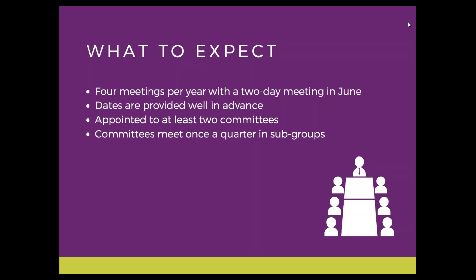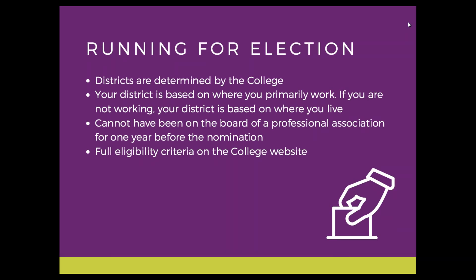We also have non-statutory committees: the finance and planning committee and the examination appeals committee. If you are elected to council, expect to be appointed to at least two of those committees, and you do have a choice. While council meets four times per year, committees meet at least once a quarter and also meet in what's called a panel or subgroup.